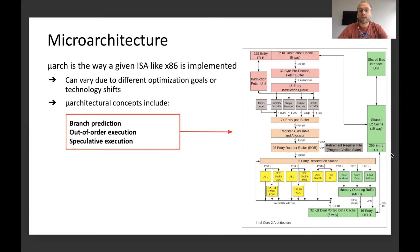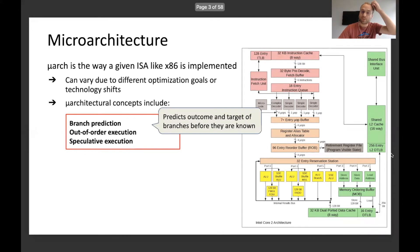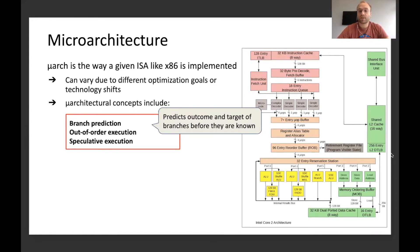Microarchitectural concepts include a few things. For example, branch prediction. Branch prediction basically predicts the outcome, but also the target of a branch before they're actually known.